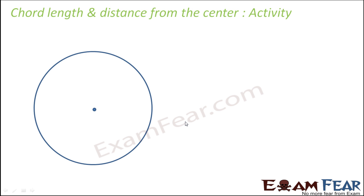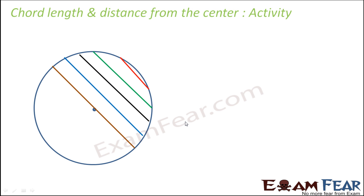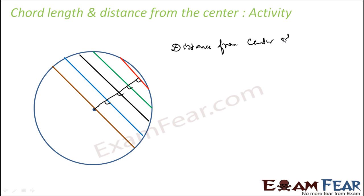Let's draw a circle and a few chords of unequal length. You will observe that the longer the chord, the shorter is the distance from the center. The brown one is the longest chord and its distance from the center is zero. The shorter the chord, the longer is the distance from the center. So the distance from the center is inversely proportional to the length of the chord.